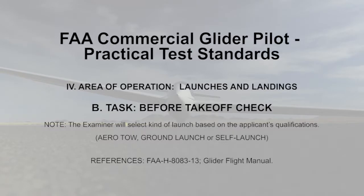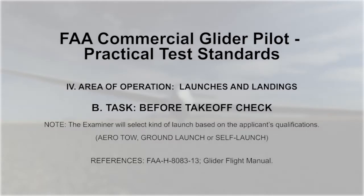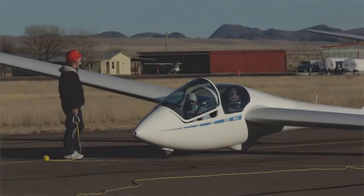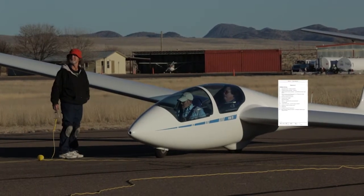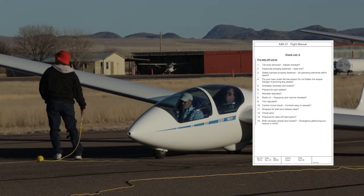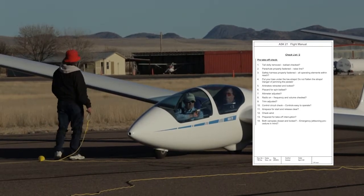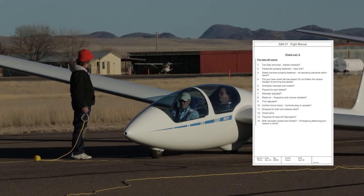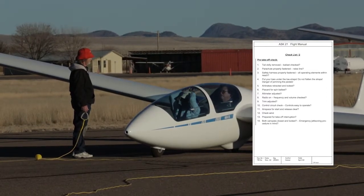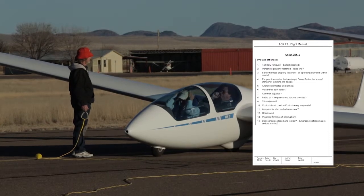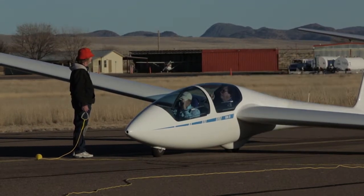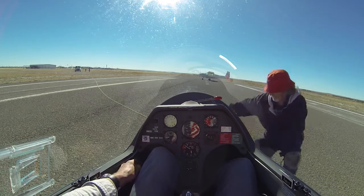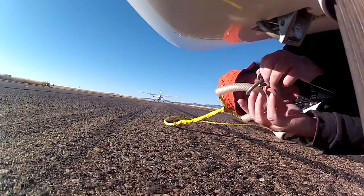Area of Operation Launches and Landings. Note: the examiner will select the kind of launch based on the applicant's qualifications — aero tow, ground launch, or self-launch. Task B: Before Takeoff Check. The primary before takeoff checklist is found in the Flight Manual or Pilot Operating Handbook for the specific glider. Several standard checklists have evolved, such as CB-SIFT-CBE. These checklists should be developed using the checklists in the glider flight manual as a starting point. Additional items on a before takeoff checklist may be added by the glider owner or the soaring club management.